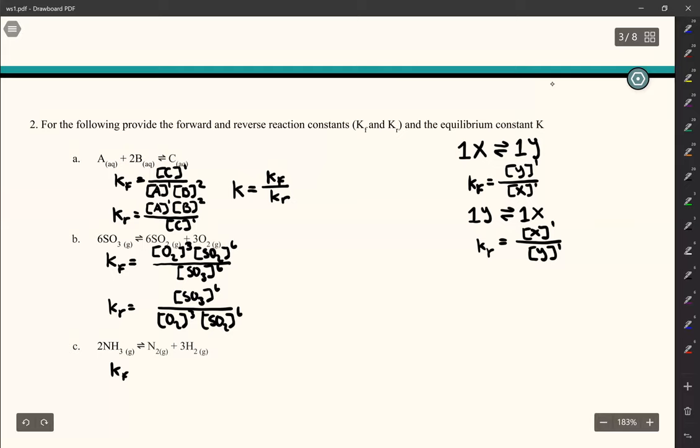Kf is equal to concentration of the hydrogen to the third power multiplied by the concentration of the nitrogen to the first power over concentration of the reactant NH3, so the concentration of NH3 to the second power. Kr would just be the opposite of that: NH3 to the second power over H2 to the third power and N2 to the first power.